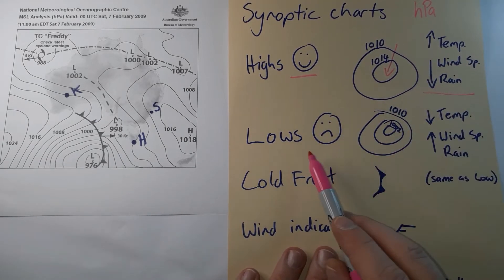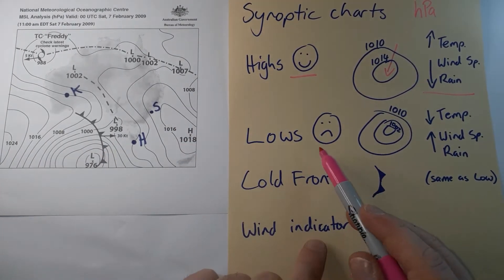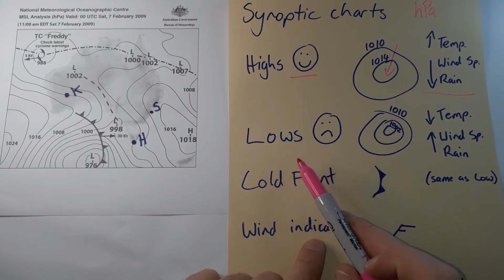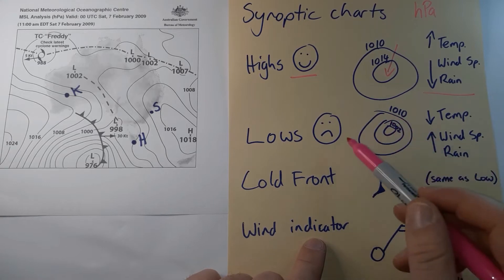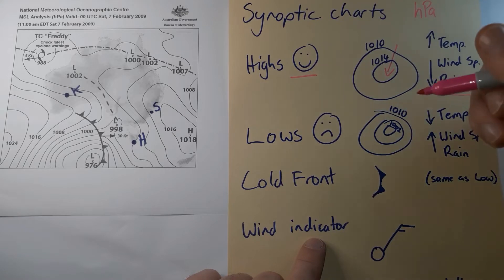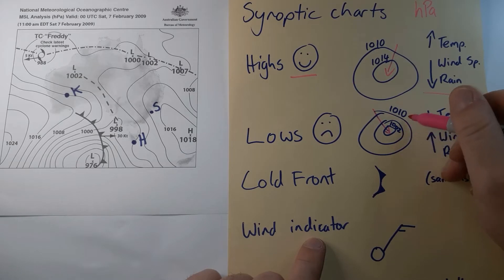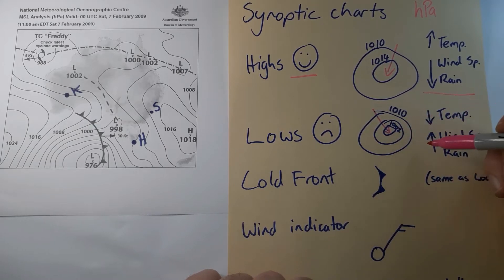The opposite of a high is a low pressure system, where air is rising up away from the Earth's surface. As it does so, it becomes a little unstable because that air cools, condenses, and causes stormy activity at times. To identify a low, look for concentric rings that are more closely spaced than in a high. The main test is whether values decrease towards the center — particularly if they go below 1010, or even below 1000 — then you're definitely looking at a low pressure system.